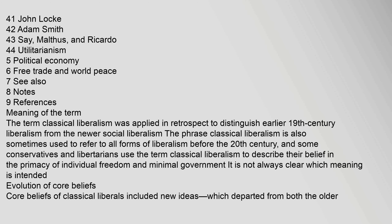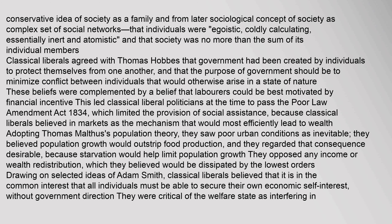Core beliefs of classical liberals included new ideas which departed from both the older conservative idea of society as a family and from the later sociological concept of society as a complex set of social networks — that individuals were egoistic, coldly calculating, essentially inert and atomistic, and that society was no more than the sum of its individual members. Classical liberals agreed with Thomas Hobbes that government had been created by individuals to protect themselves from one another.